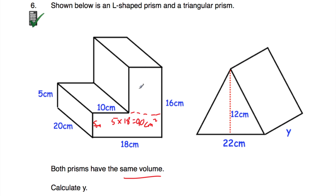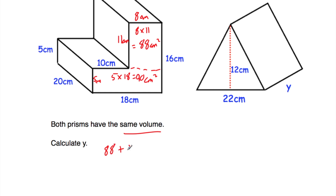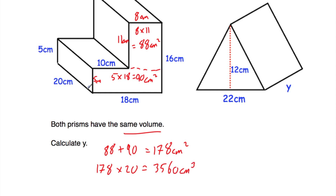For the top part of the L-shape cross-section: the whole width is 18 centimetres and this part is 10, so that's 8 centimetres. The height of this part is 5, the whole height is 16, and 16 take away 5 is 11. So 8 times 11 is equal to 88 centimetres squared. The total cross-section area is 88 plus 90, which is equal to 178 centimetres squared. Multiplying by the length of 20: 178 times 20 is equal to 3,560 centimetres cubed — that's the volume of the L-shaped prism.